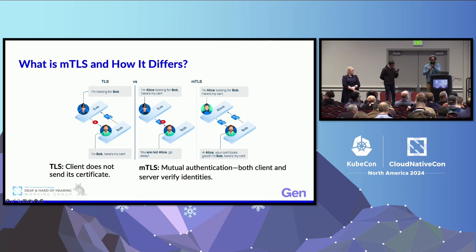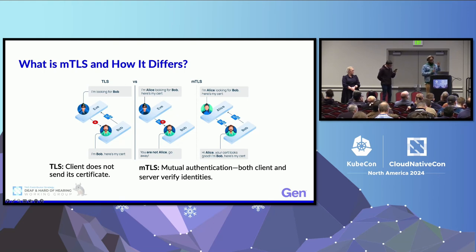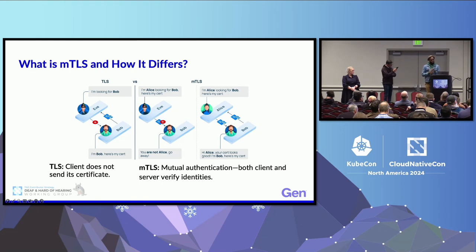MTLS, or Mutual TLS, is an enhanced version of TLS. It requires that both the client and the server authenticate each other. In standard TLS, only the server's identity is verified while the client remains anonymous. In MTLS, the client also provides a certificate, allowing the server to verify the client's identity. This two-way authentication is critical in environments where multiple services need to securely communicate — for example, in microservice architectures. This mutual trust helps protect against identity-based attacks and makes MTLS ideal for applications requiring stringent security like service meshes.